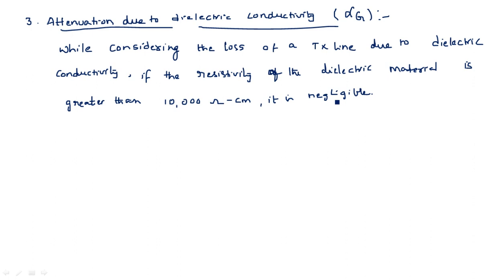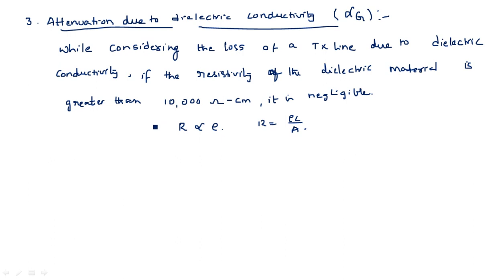When resistivity is greater than 10,000 ohm·cm, resistance is high and conductivity is very low. Since conductivity is very low, the attenuation due to that parameter also becomes negligible. That is why we do not need to worry about this parameter when resistivity exceeds 10,000 ohm·cm.